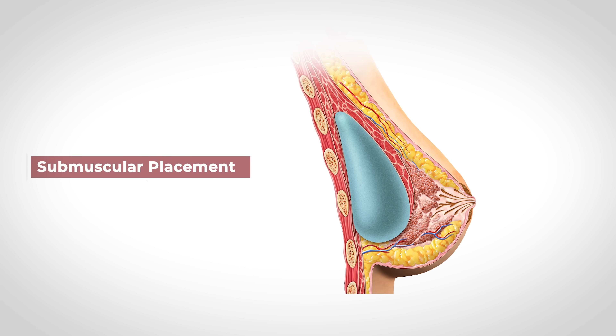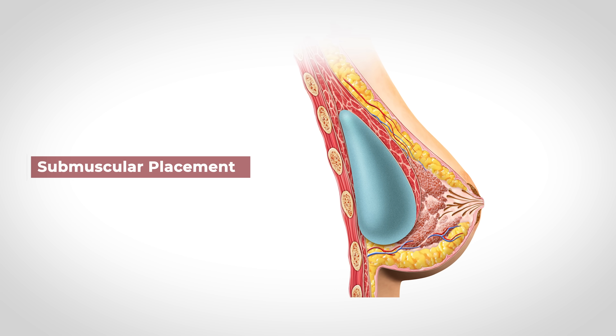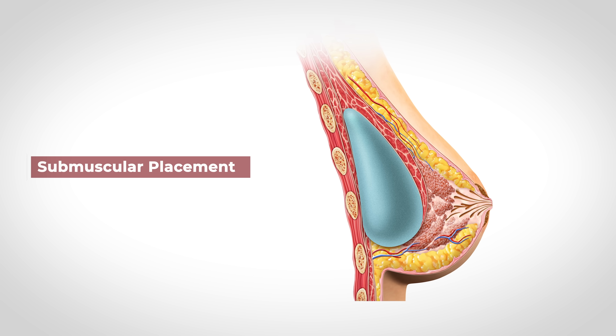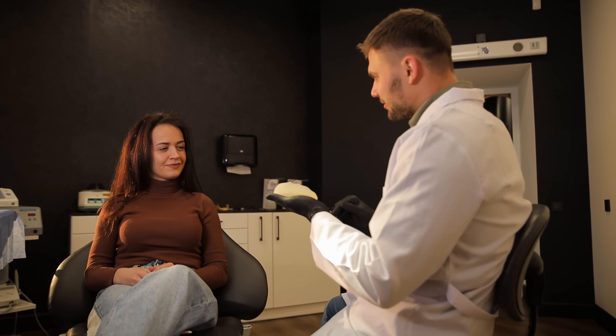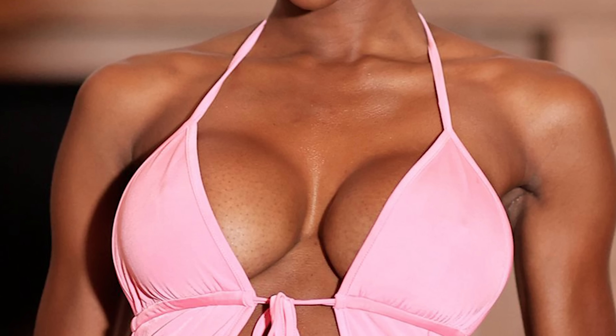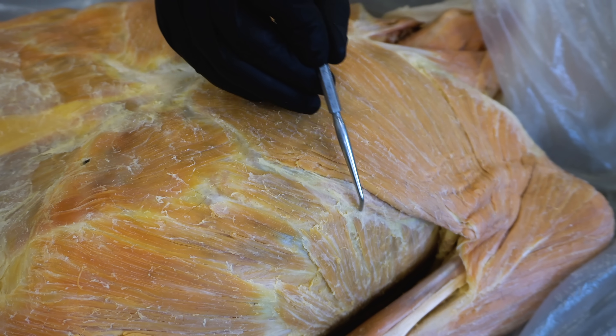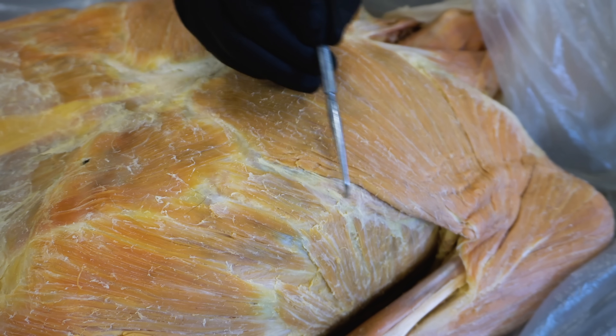Whether a plastic surgeon and patient decide on over or under the muscle depends on a variety of factors. If the patient has a small amount of natural breast tissue, putting the implant above the muscle is usually not a good option because this will likely show too much of the implant and you can get rippling. So, this person could be a better candidate for sub-muscular placement, where an incision is made along the inferior margin of the pectoralis major to create a pocket for the implant — this tends to give a more natural-looking appearance.